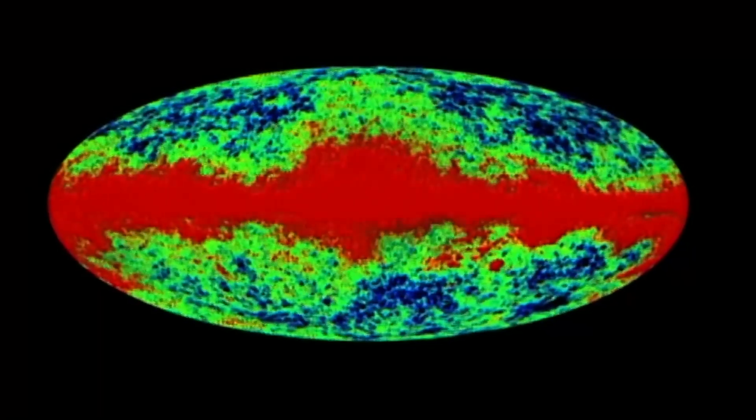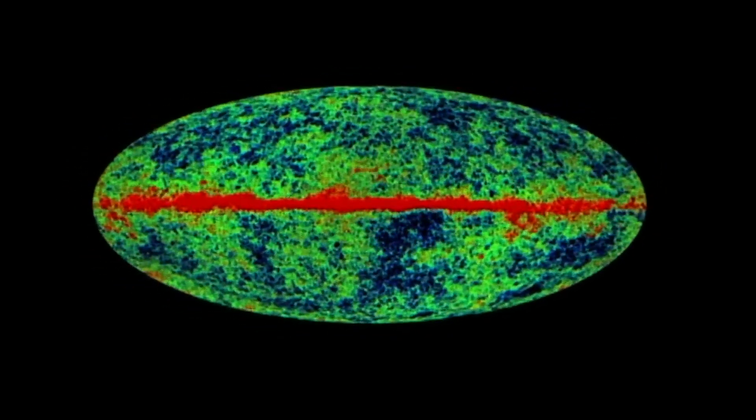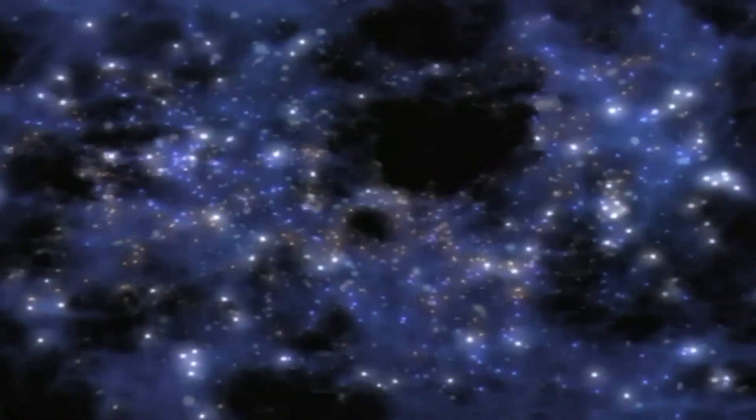This idea starts with a universe not full of matter and light like we see today, but filled with a special kind of energy that's part of space itself. This energy caused the universe to expand really quickly, much faster than it's expanding now, and this expansion happened at a steady, unchanging rate. Because of this rapid expansion, the universe got stretched out so much that it ended up flat and smooth with tiny ripples caused by quantum mechanics. Then something amazing happened. The energy that was stretching space turned into the matter and radiation we're familiar with. That moment is what we call the hot Big Bang. It's not that the universe was born from a singularity where physics breaks down, but it transformed from this energetic state into the hot, dense universe that would cool down and become everything we see.